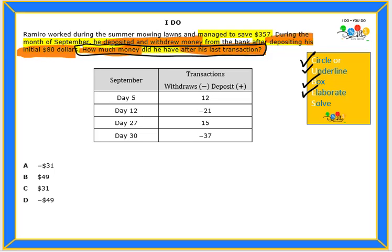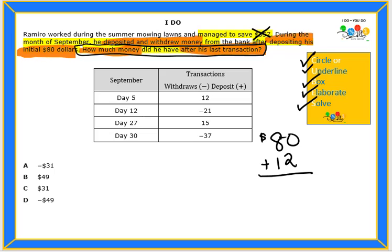Our final step is to solve the problem. We know he had $357, but we do not need that amount because he only deposited $80 into his account. Then he was depositing and withdrawing money. So on day 5, he deposited $12 — that means we add — and he had $92.